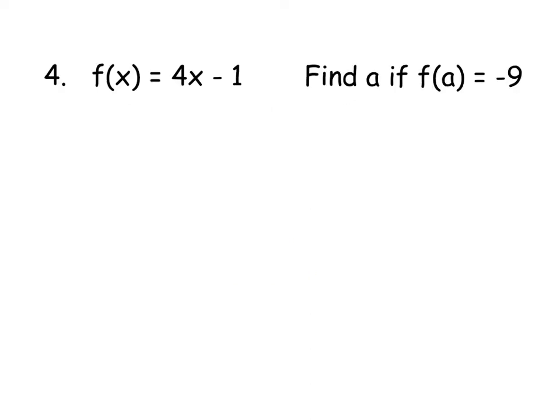So it will tell you f of x equals your expression 4x minus 1. It says find A if f of A equals minus 9. So the first thing to notice is it's not asking you to substitute in minus 9, which is the most common mistake. So please do not do that. x has been replaced with an A. So the first thing I'm going to do is replace x with an A. And it's told you that f of A equals minus 9. So you can put your expression equal to negative 9. So part B is forming an equation.